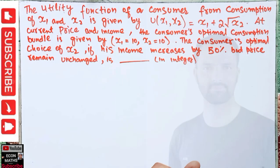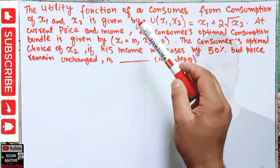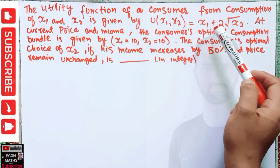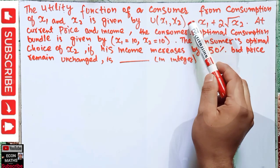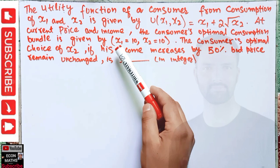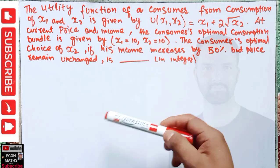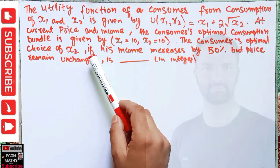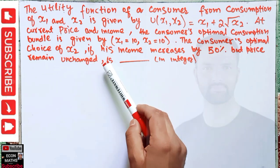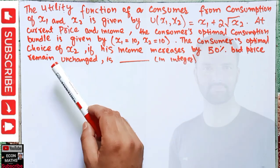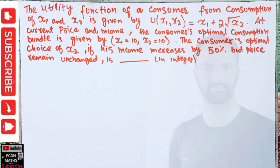Hi, this is Halal. In this video on the mathematical economics series, we will try to solve a problem on quasi-linear utility functions. The utility function of a consumer from consumption of goods x1 and x2 is given by u(x1, x2) = x1 + 2√x2. At current price and income, the consumer's optimal consumption bundle is x1 = 10 and x2 = 10. We have to find the consumer's optimal choice of x2 if income increases by 50% but prices remain unchanged.